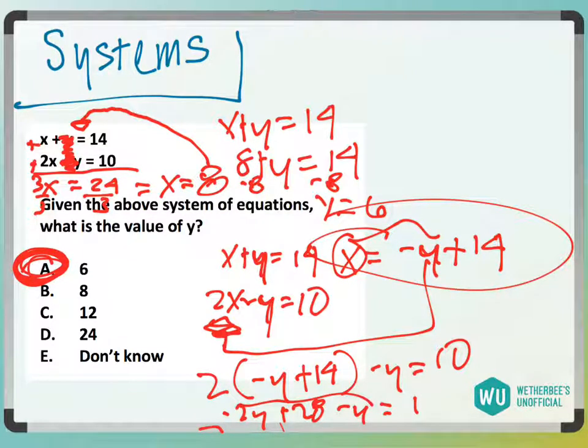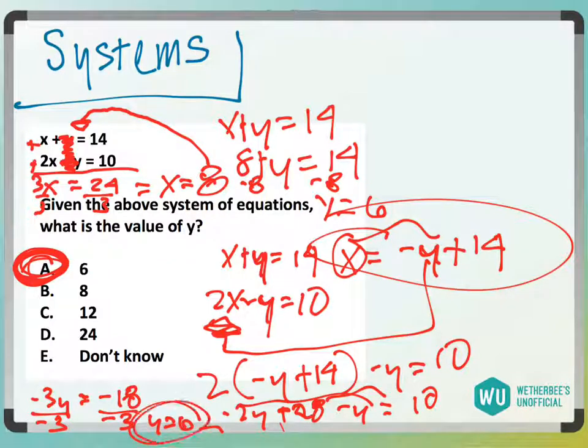Negative 2y minus y is minus 3y equals, and move this 28 to the other side to this 10. And I'd get equals negative 18. I'd divide by negative 3, and I would also get that y equals 6, answer choice A.